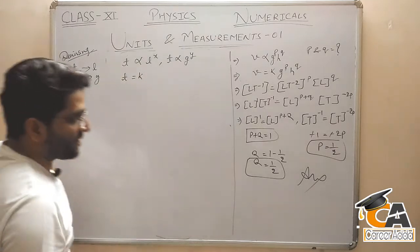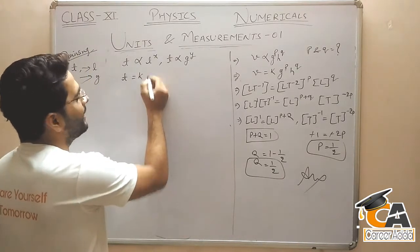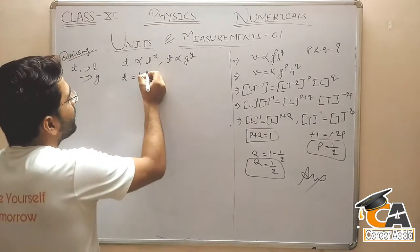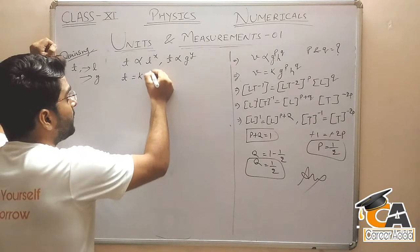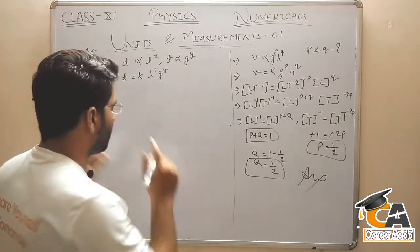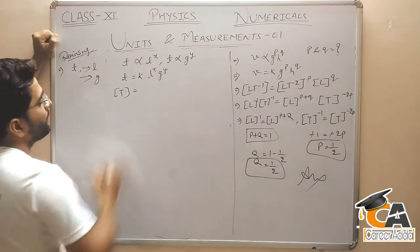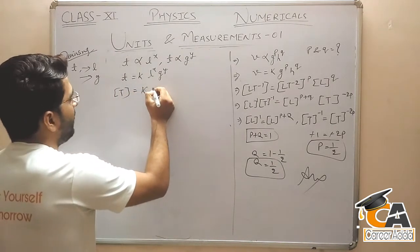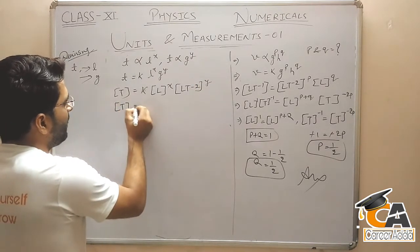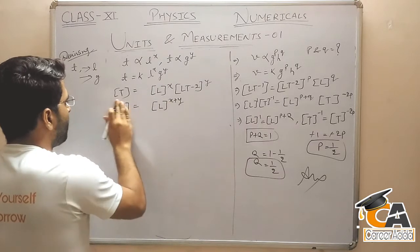Therefore T is equal to K (dimensionless constant) × L^X × G^Y. T क्या है: time. L क्या है: length. G क्या है: acceleration. I hope कि अब सारी dimensions आपको learn हो गई होंगी। K L की dimension L^X, G की dimension (LT⁻²)^Y आना, तो T = K × L^(X+Y) ...